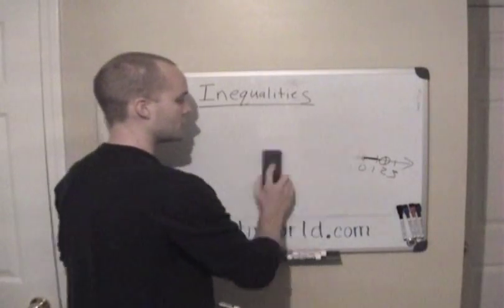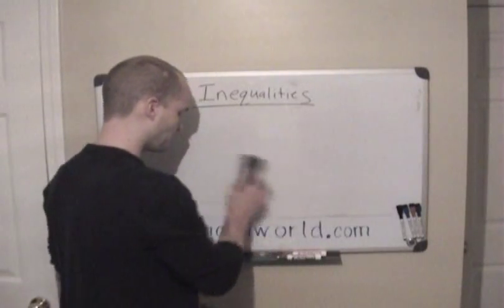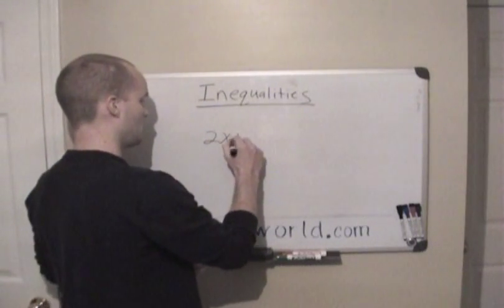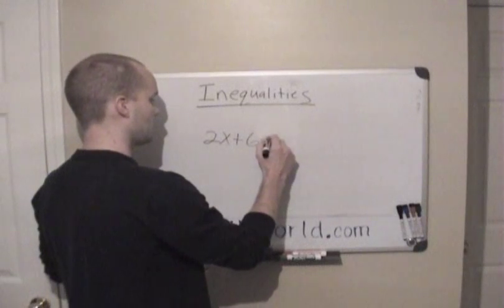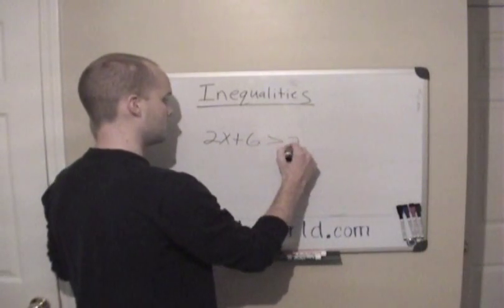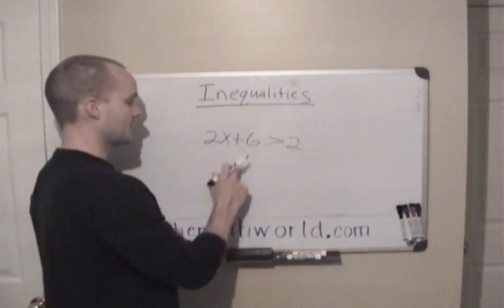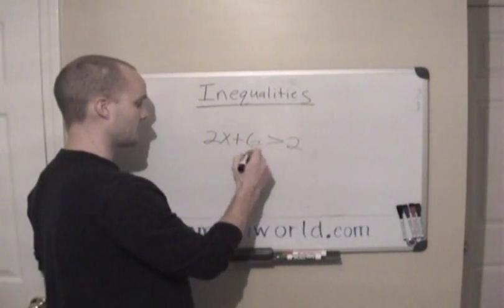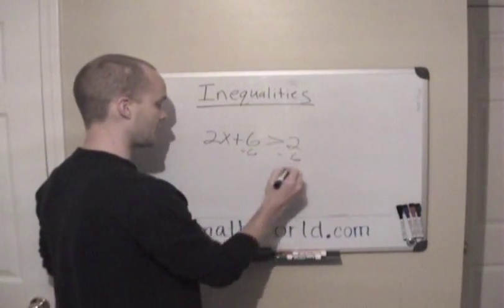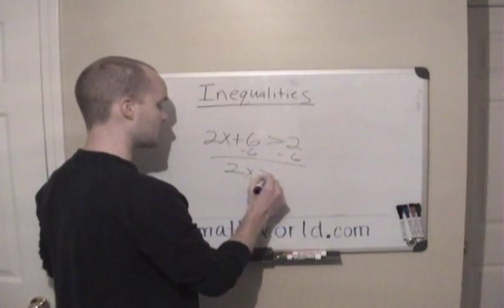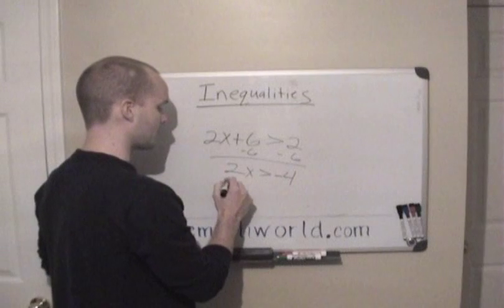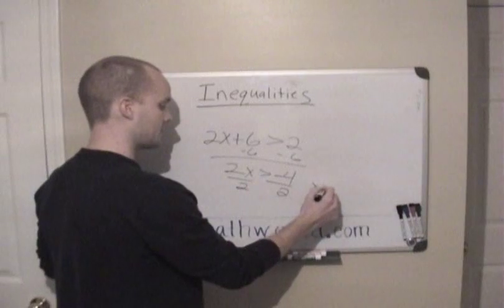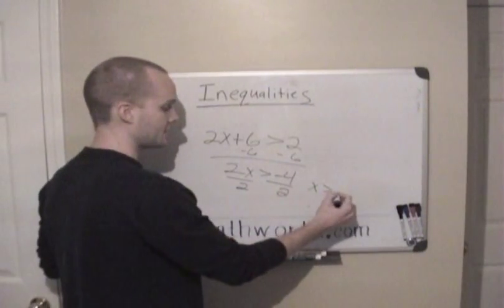One of the key things to always remember when you solve inequalities: we'll do 2x plus 6 is greater than 2. To get x by itself, first we subtract 6 from both sides, giving us 2x is greater than negative 4. Then we divide both sides by 2, and we get x is greater than negative 2.